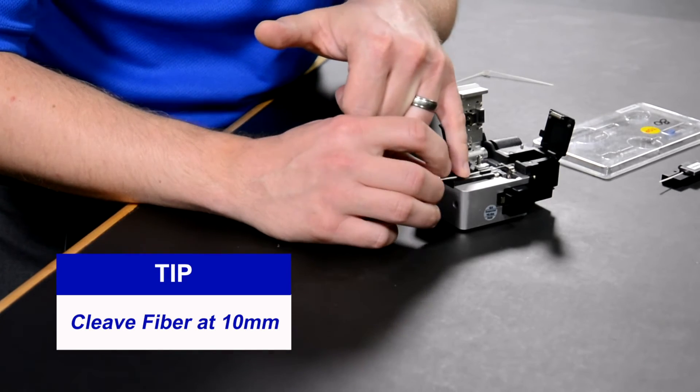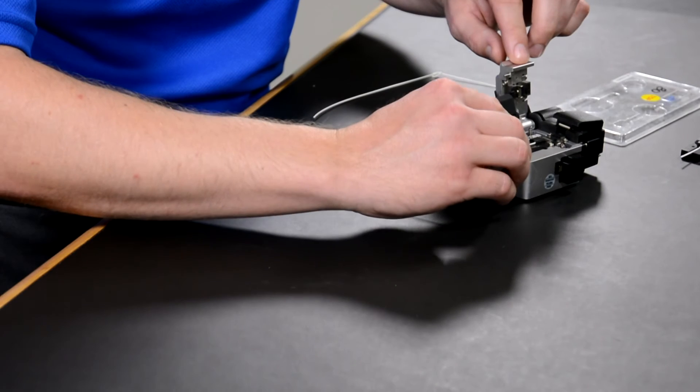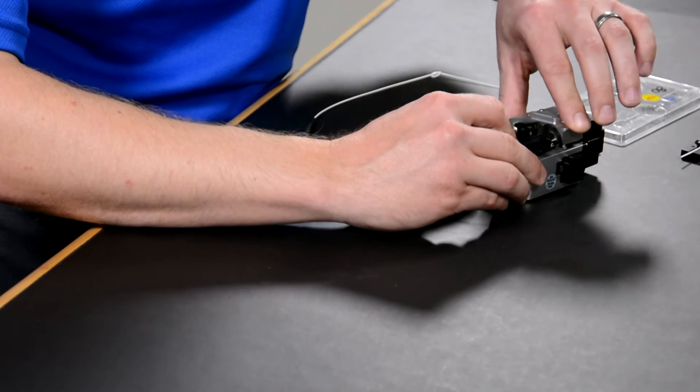So we want to cleave this to 10 millimeters. We'll close the trash bin and then go ahead and cleave the fiber.